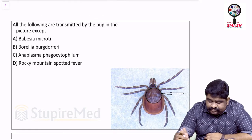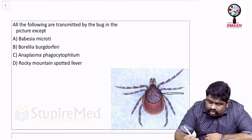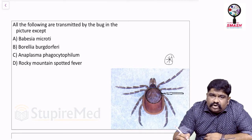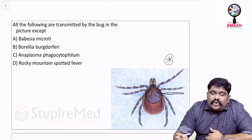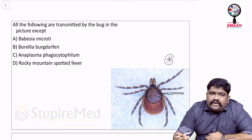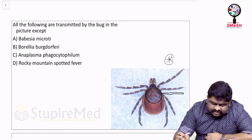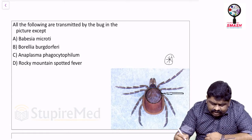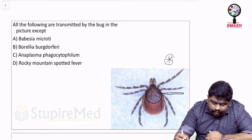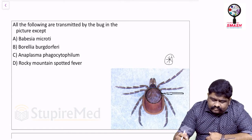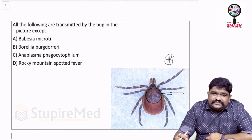You have to know what this bug is, then recall your knowledge — every bug transmits a specific kind of infection. On that basis, look at the options: Babesia microti, Borrelia burgdorferi, Anaplasma phagocytophilum, and Rocky Mountain spotted fever. Have a guess first.